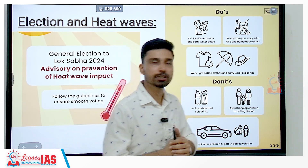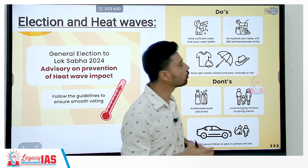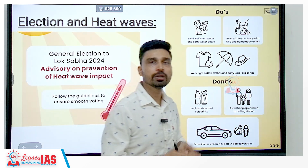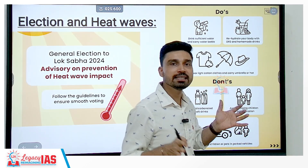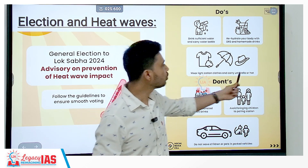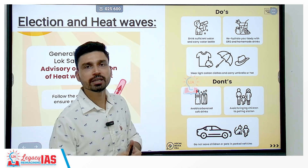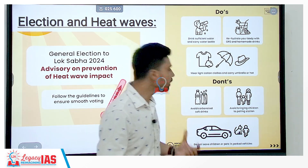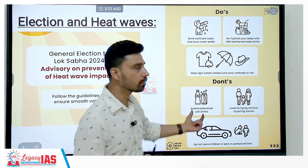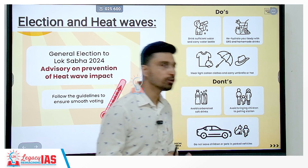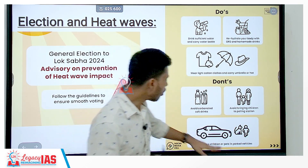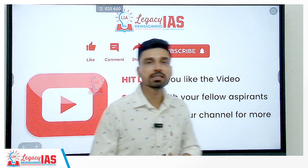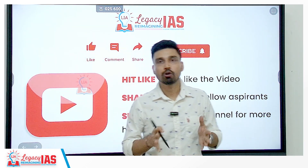The second guideline is to rehydrate your body with ORS, that is oral rehydration solution, and homemade drinks so that your body does not lose necessary minerals. Wear light cotton clothes and carry an umbrella or hat to protect against intense sunlight. The Election Commission of India has also said what you should not do: avoid carbonated soft drinks, avoid bringing children to polling stations, and do not leave children or pets in parked vehicles, as the interior of these vehicles can become extremely hot and dangerous.